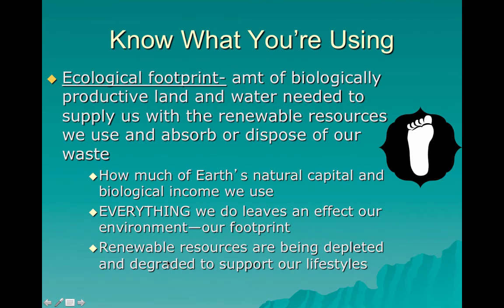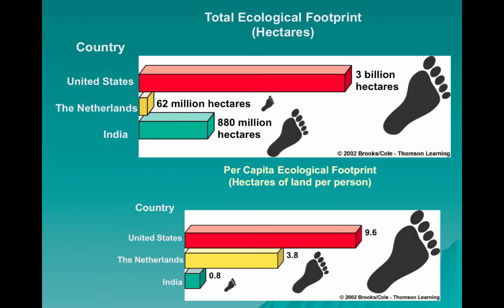You need to know what an ecological footprint is. Ecological footprint is the amount of biologically productive land and water needed to supply us with the renewable resources we use and to absorb and dispose of our waste. We usually discuss it in terms of per capita — per person — because that shows how much each individual uses. Look at the differences between an entire country versus per capita. India appears to be using a lot overall, but since it's one of the most populous countries in the world, their per capita footprint is actually very small. The United States, by contrast, has one of the highest per capita footprints of any country in the world.